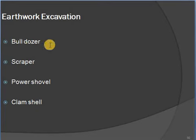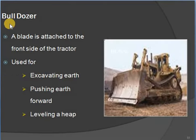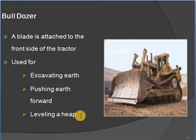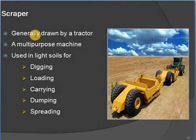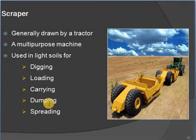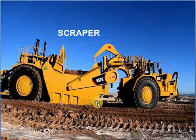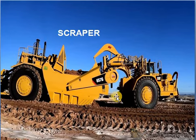Machines for WBM road construction include: bulldozer, scraper, power shovel, and clamshell. A bulldozer has a blade attached to the front of a tractor, used for excavating, pushing, and leveling the ground. A scraper is generally drawn by a tractor — it is a multipurpose machine used in light soils for digging, loading, carrying, dumping, and spreading. It is used in large construction projects.